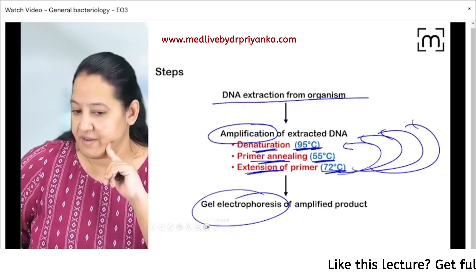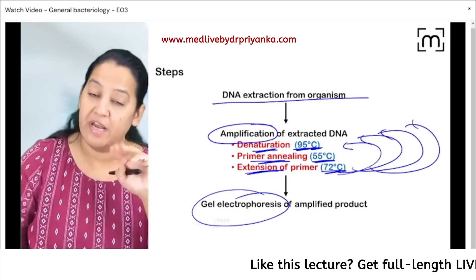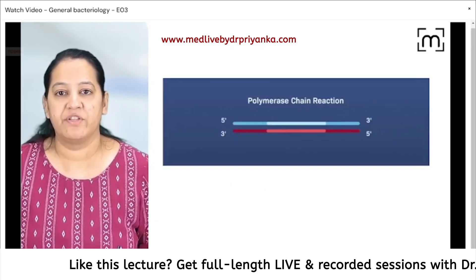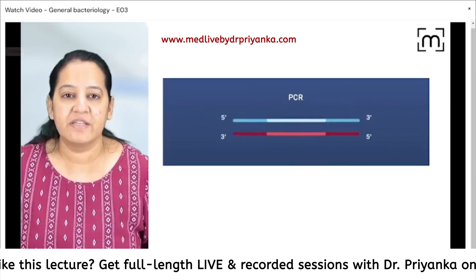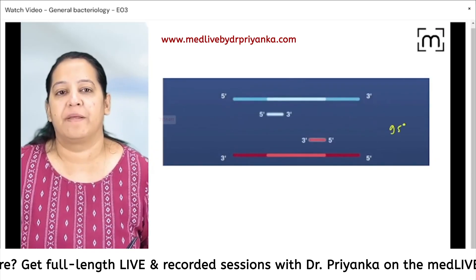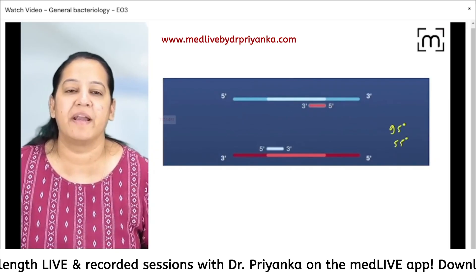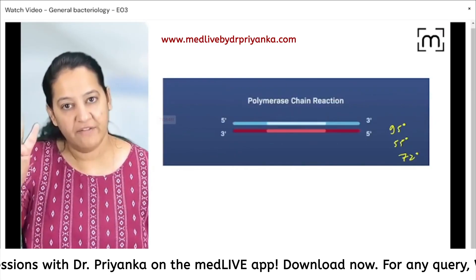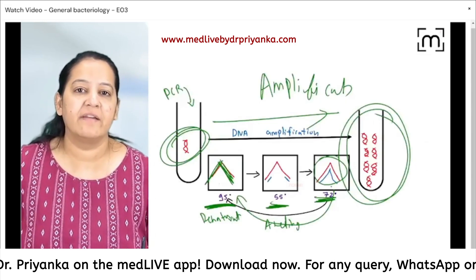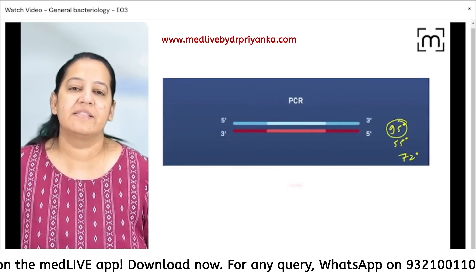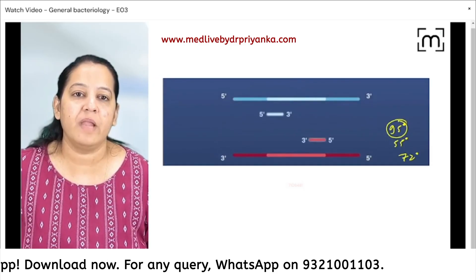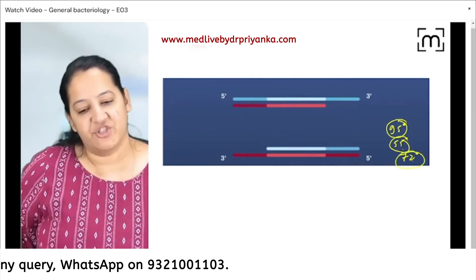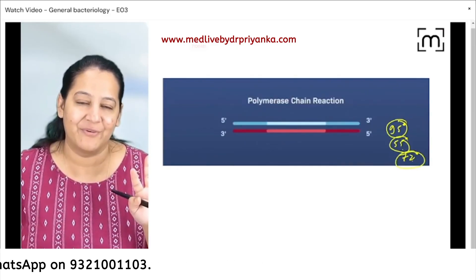Now I will show you a video in which all three steps are clearly visible. See the two strands — leading and lagging. At 95°C, denaturation takes place. Then at 55°C, the primers come and bind — annealing takes place. And then at 72°C, extension. So four strands are formed. We started with two and ended with four.